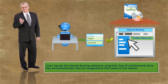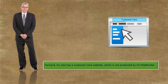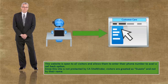they are recognized by their name on the website. Forward Incorporated also has a customer care website, which is not protected by CA SiteMinder. This website is open to all visitors and allows them to enter their phone number to avail a call back option. Since this site is not protected by CA SiteMinder,